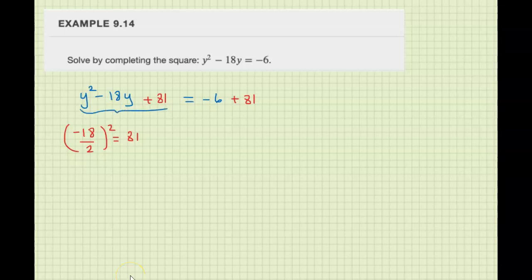I'm going to factor this: this is y minus 9, y minus 9. Then negative 6 plus 81 is 75. This is y minus 9 squared equals 75.